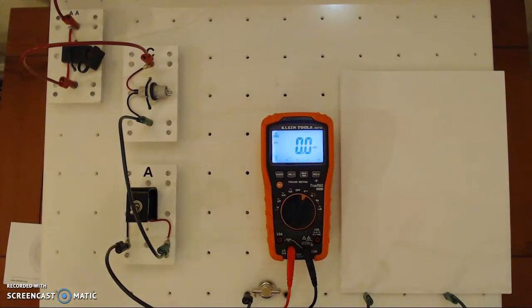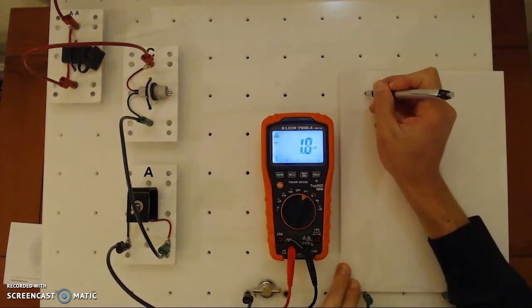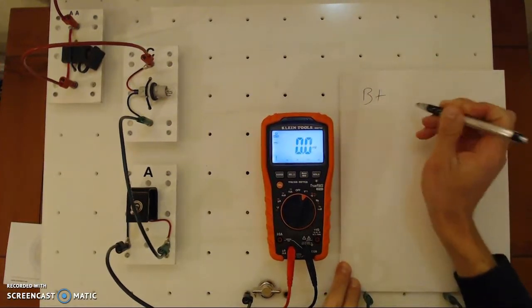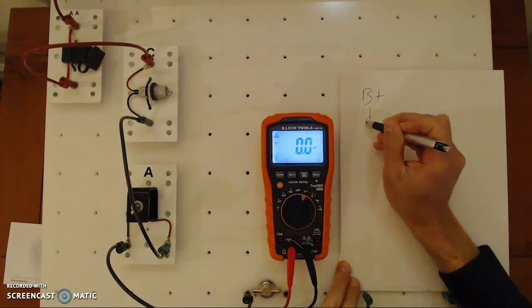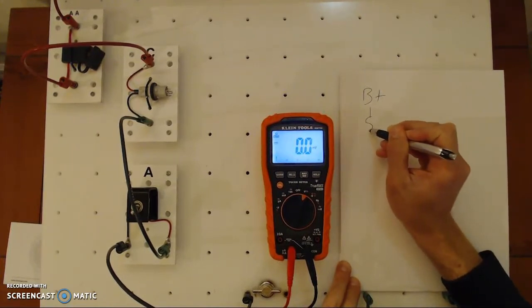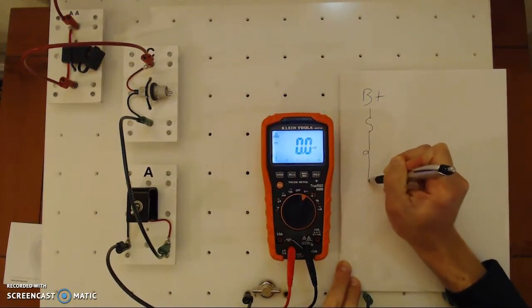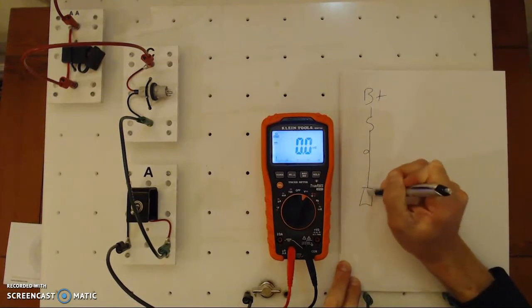In this video, I want to start off by explaining or showing what happens when the switch is after the load. So we'll draw our circuit again. Here's our battery plus. Once they come in, we have our circuit protection device, and then in this case we have our load first, and then we're going to come into the switch.